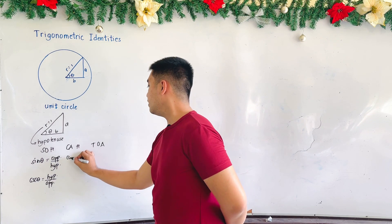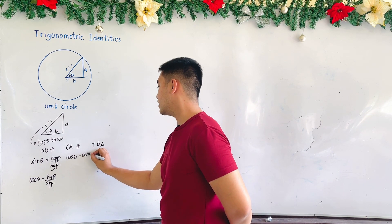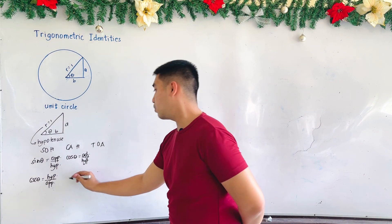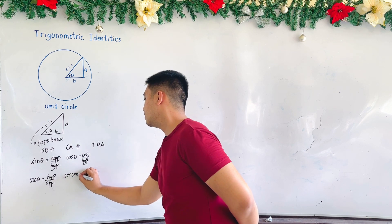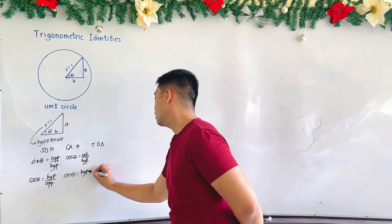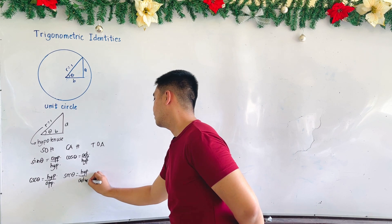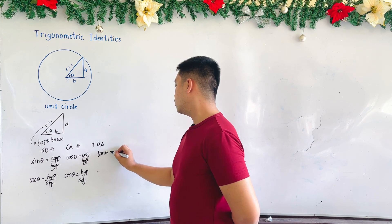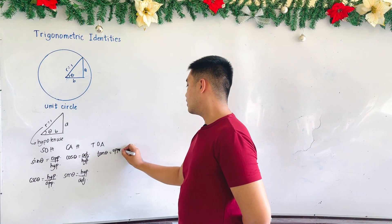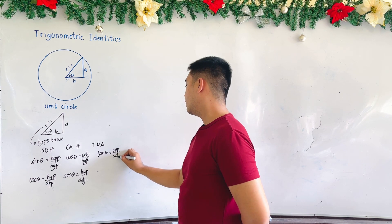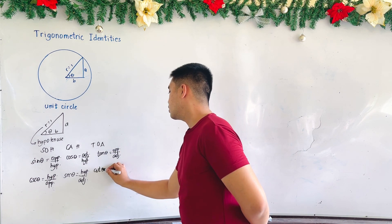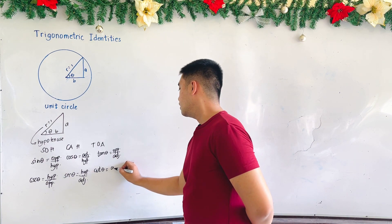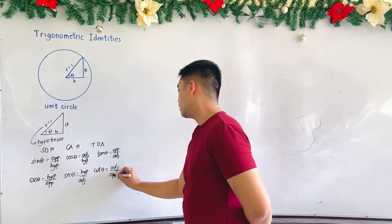For CAH, we have cosine. Therefore, cosine theta is adjacent over hypotenuse. The reciprocal of cosine is secant theta. Therefore, that is hypotenuse over adjacent. And for TOA, we have tangent theta, which is opposite over adjacent. And cotangent theta, which is the reciprocal of tangent, is adjacent over opposite.